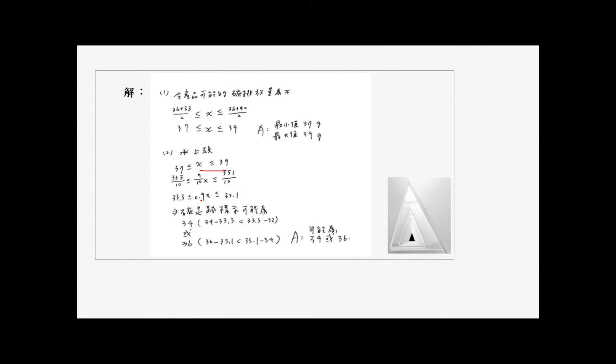原来我们假设s大于等于37小于等于39,那这三项都乘以百分之90就是十分之九,算出来结果是0.9s大于等于33.3小于等于35.1。